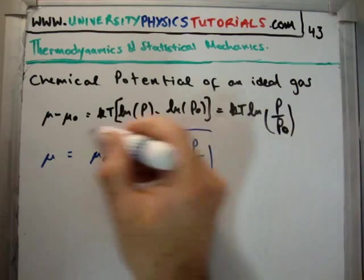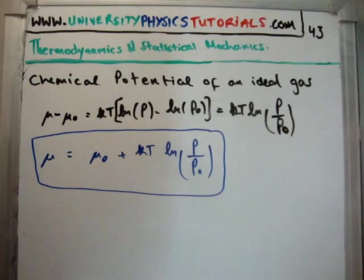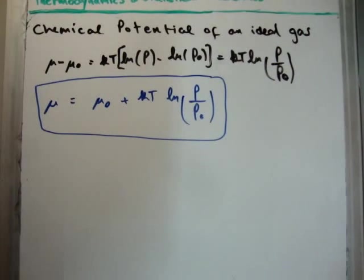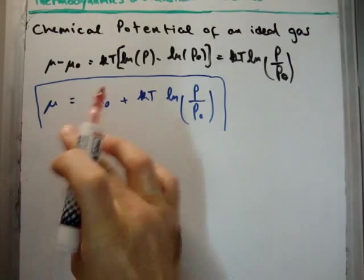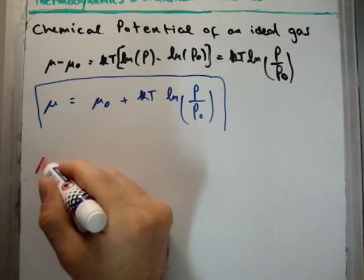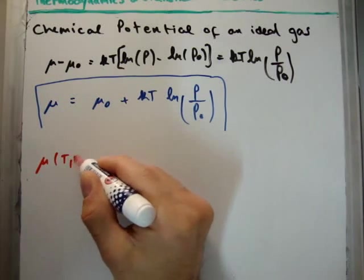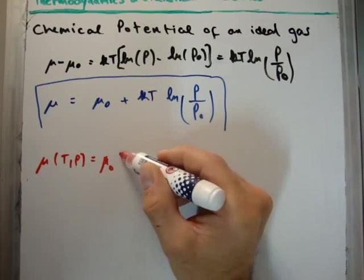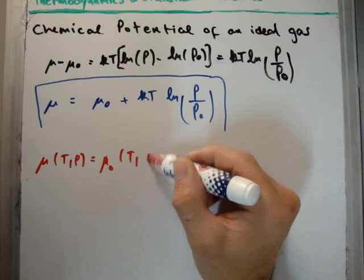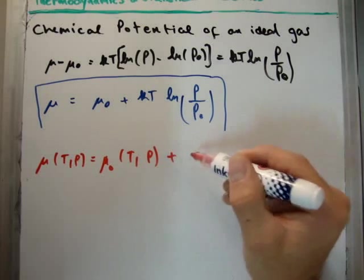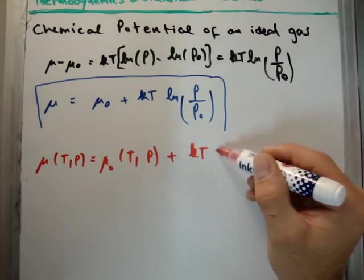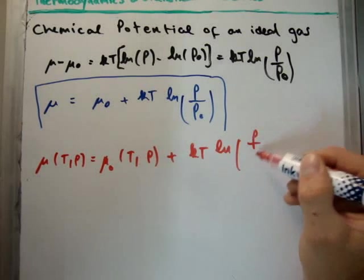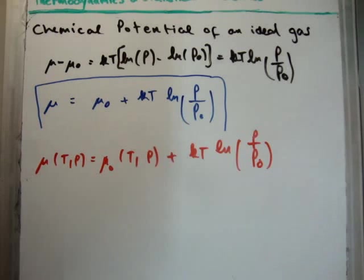That's it. That's the chemical potential of an ideal gas. But I'd just like to do a small bit of analysis of this. First of all, if we look at what we'll say the chemical potential is a function of, we say that the chemical potential is a function of temperature and pressure. We'll say that μ zero is also a function of temperature and pressure, and it's equal to plus KT the log of P over P zero. We know, of course, pressure is just a function of pressure.